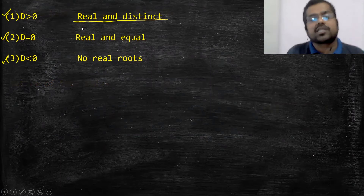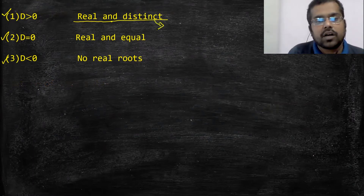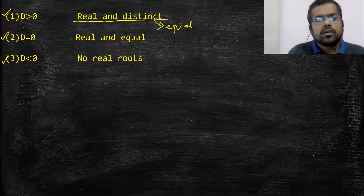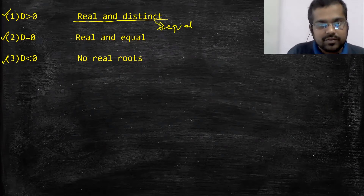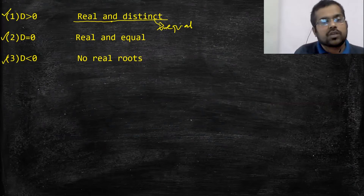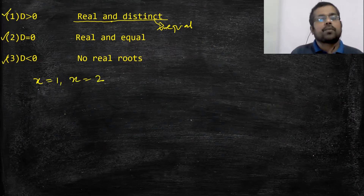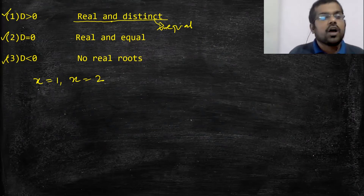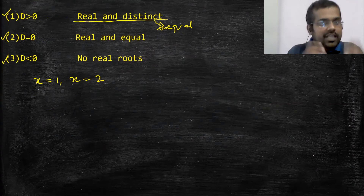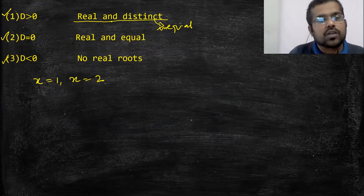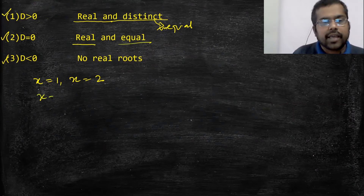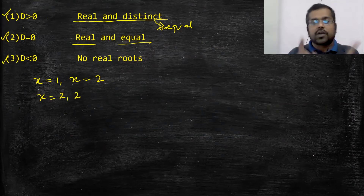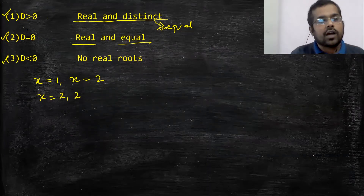अगर d > 0 होता है तो roots real and distinct होते हैं — मतलब real number और अलग-अलग (unequal)। जैसे किसी equation का root x = 1 और x = 2 आया तो roots are real and distinct। D = 0 मतलब b² - 4ac = 0 — roots are real and equal। मतलब x की दोनों values equal होंगी, जैसे 2 और 2।